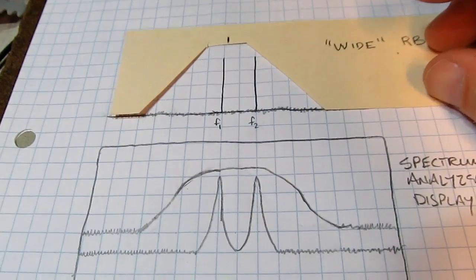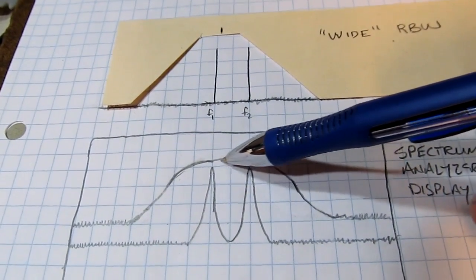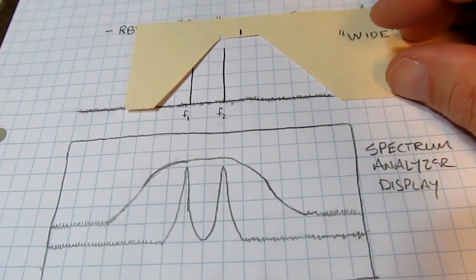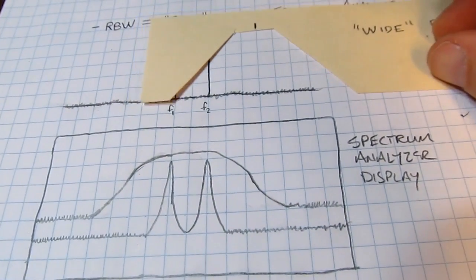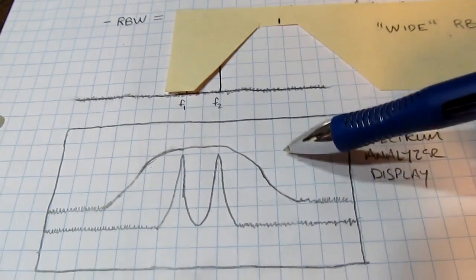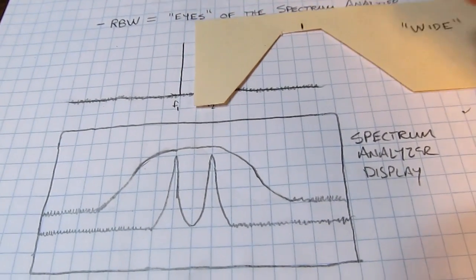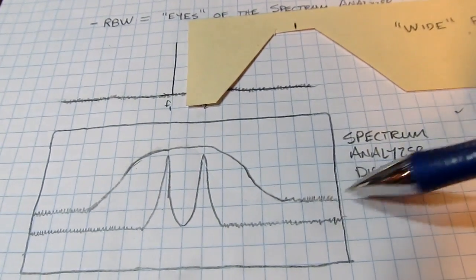We keep going, now both of those tones are detected inside that filter. So we're right at the flat top portion of this display. As we walk our way through, F1 is starting to get cut off so the power starts decreasing. We get way out over here and now all those signals are out of the filter, we're back down to the noise floor.